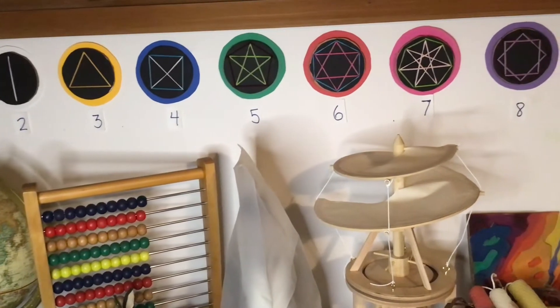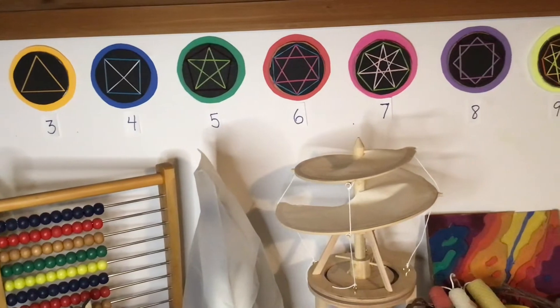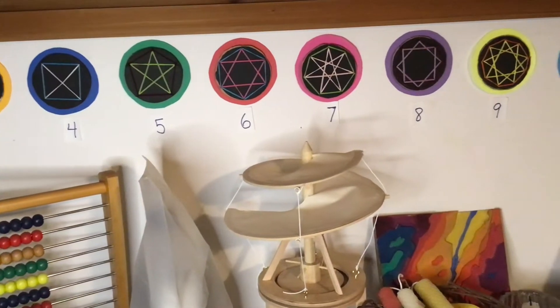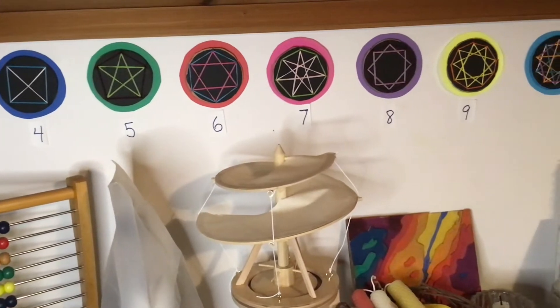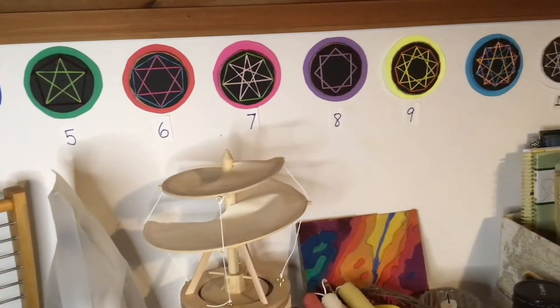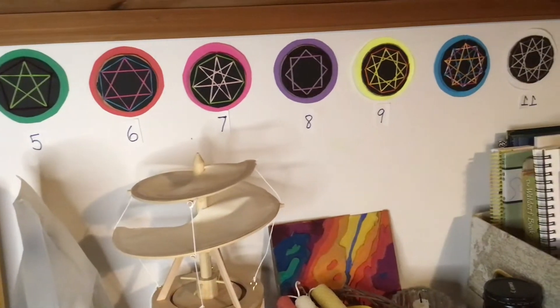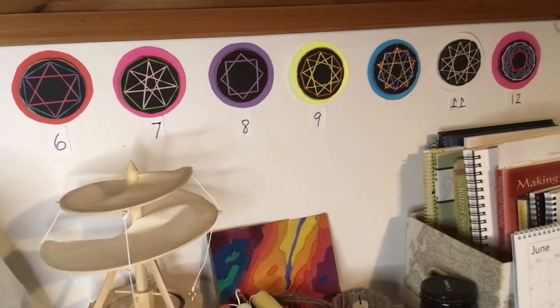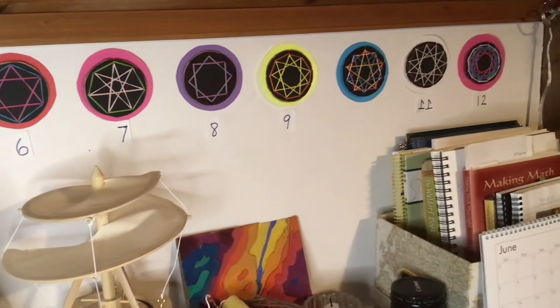They start out with the introduction of the circle, and then all the other lines and forms form from that circle. So we begin by introducing the circle, and then you place two dots on the circle, and the connection of those two dots forms the line. The connection of three dots on a circle forms the triangle, four dots the square, five dots the pentagon, and so forth.